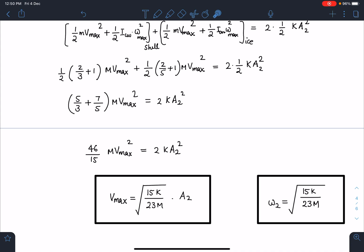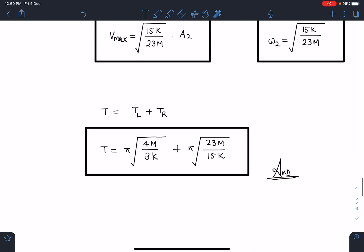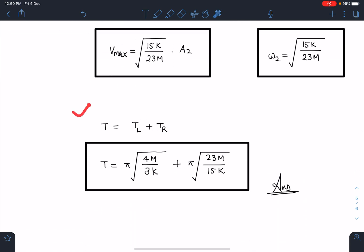This omega_2 is also known to me. Now I can write the overall time period as time for left part plus time for right part. Suppose it goes like this and comes back to the original position, this time is going to be total time period by 2 for the left part, which is pi times √(4M/3K).